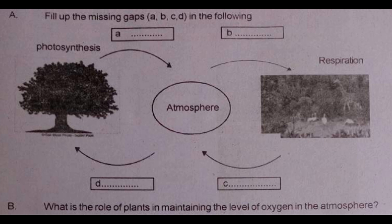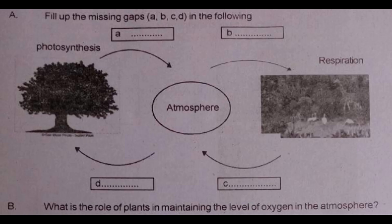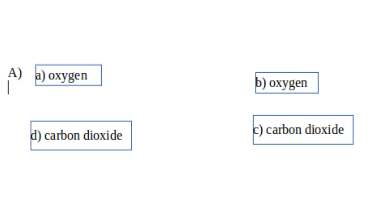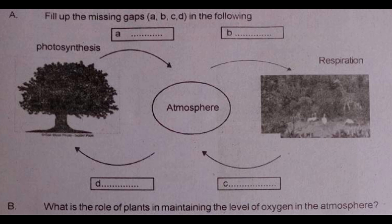We will use carbon dioxide and put carbon dioxide into the diagram. After doing that, we will use photosynthesis. We will place the plants in our environment. D is carbon dioxide. B is the role of plants in maintaining the level of oxygen in the atmosphere.